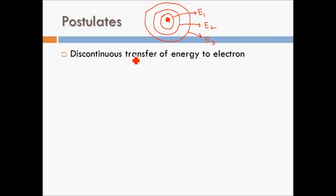You cannot randomly transfer any energy value to the electron. For example, if the electron is in the second orbit with energy E2 and you try to give it 0.998 × E2 — say by shining a ray of light on it — the electron cannot accept this energy. It will simply emit back that radiation in a different direction; it won't keep that energy, because only specific energy values are allowed.